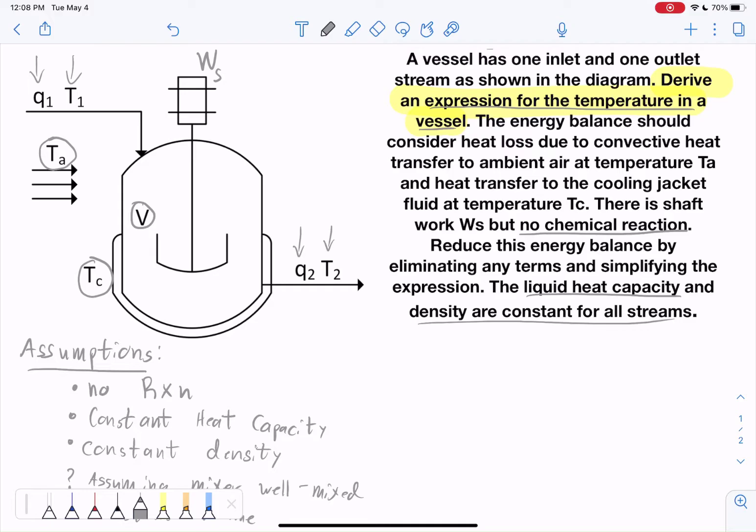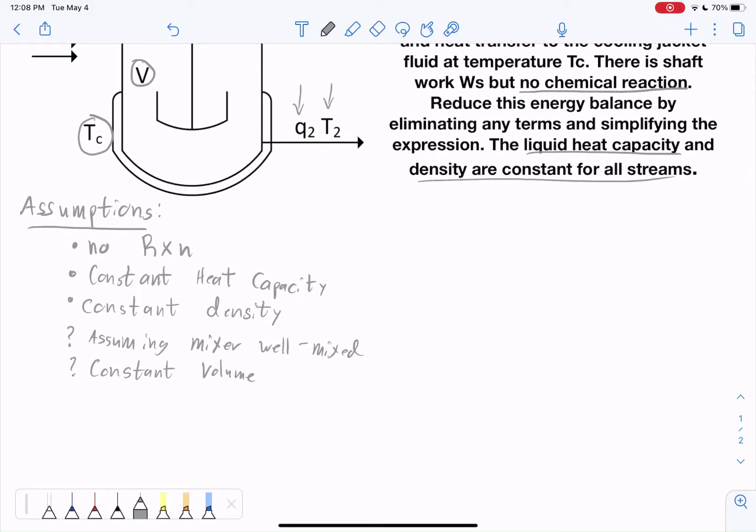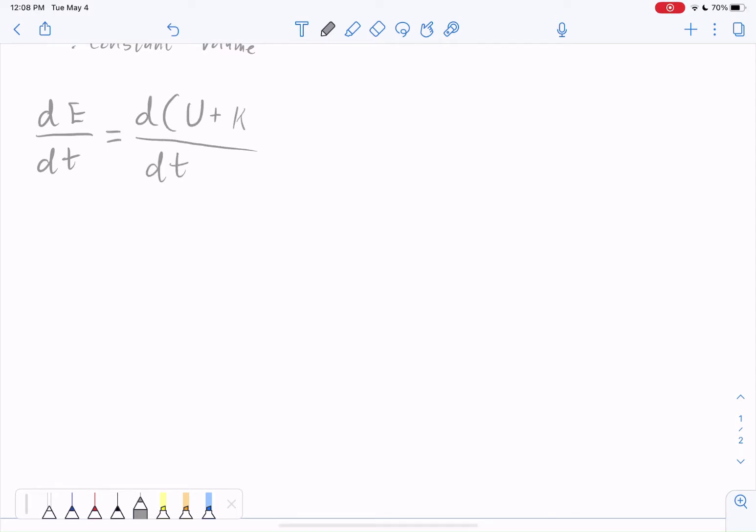Next, we're going to write dynamic balances. So we're going to go ahead. Let's look at our transient energy balance and go from there. So we'll start with an energy balance. And that should be the change over time of both internal energy, kinetic energy, and potential energy.